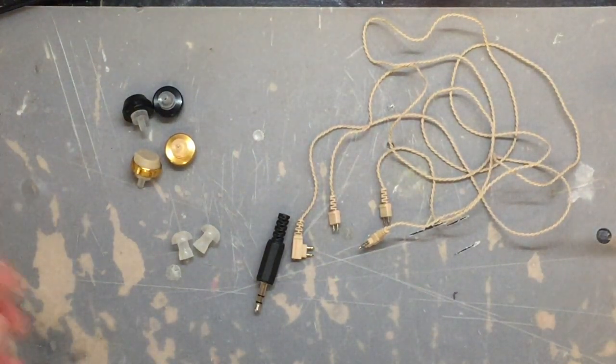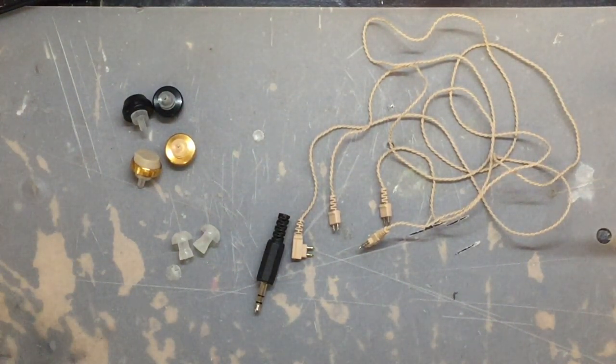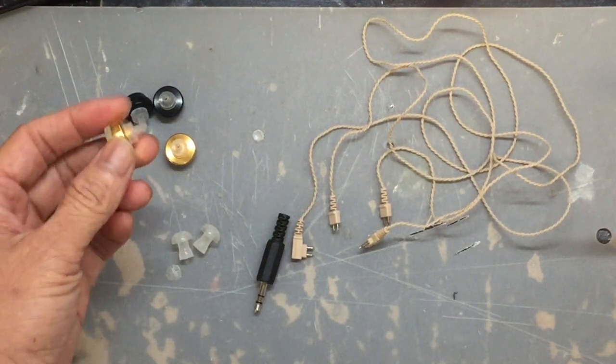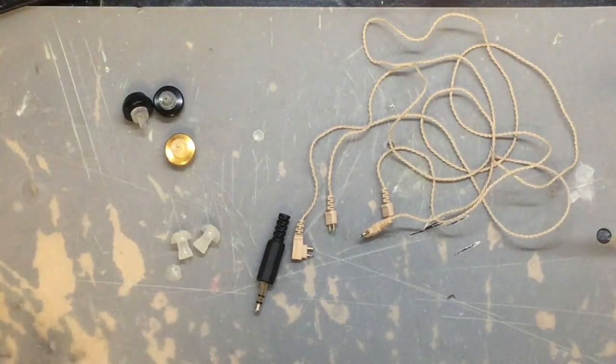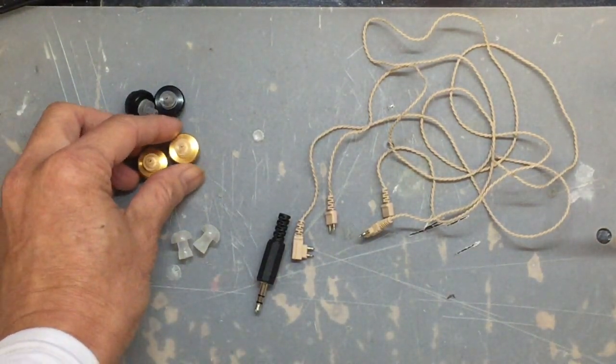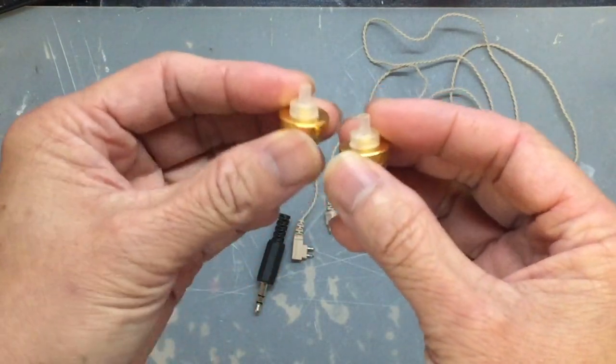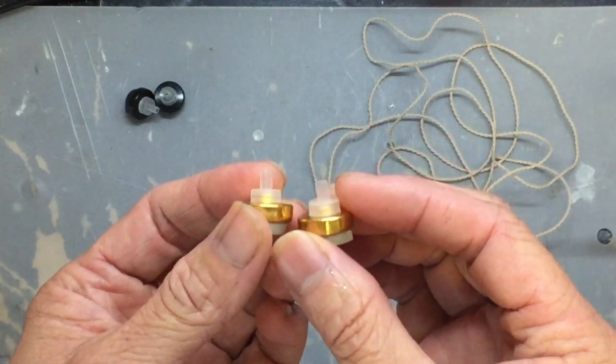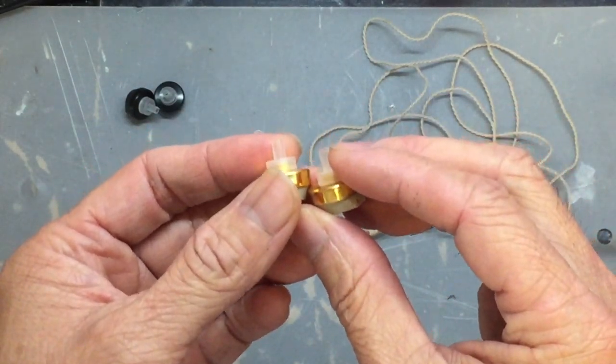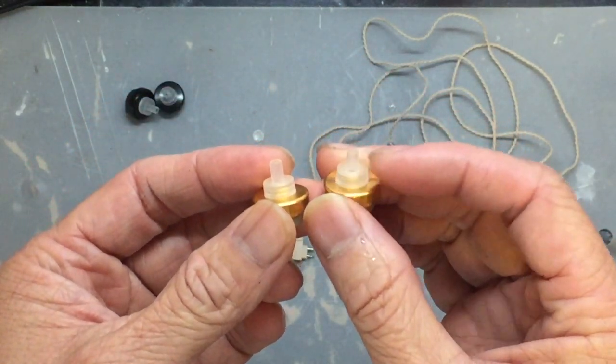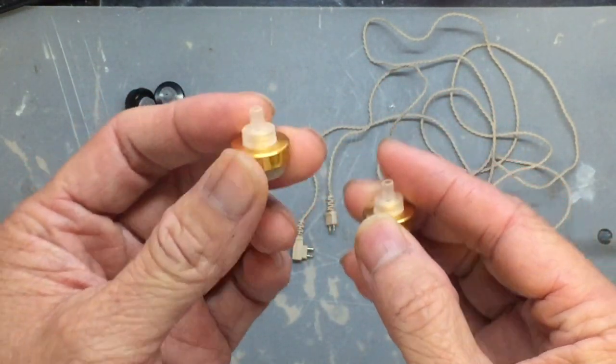First, we need to gather all the components. We have the hearing earbuds that you can purchase through the links I will provide in the description on AliExpress. Usually they're one to two US dollars each. You have to buy a pair so you can put them into both ears to hear the loudest sound from the crystal radio.